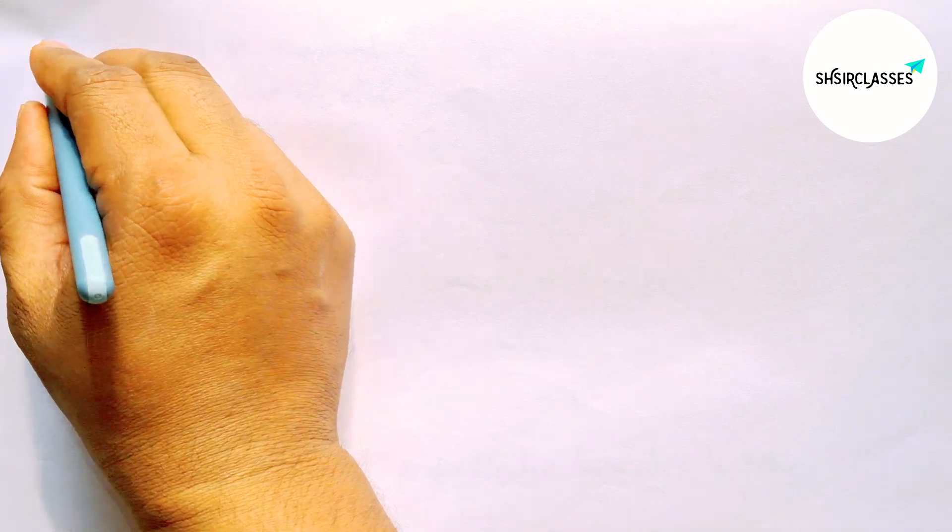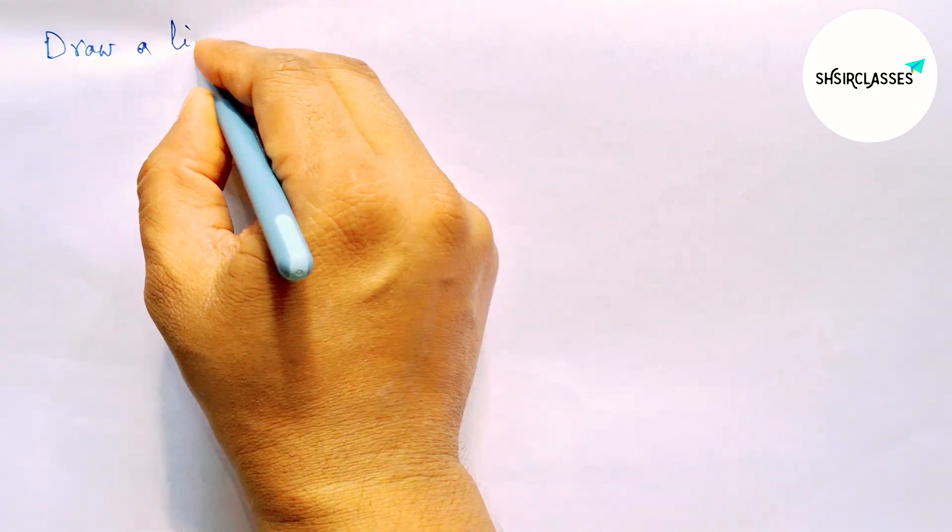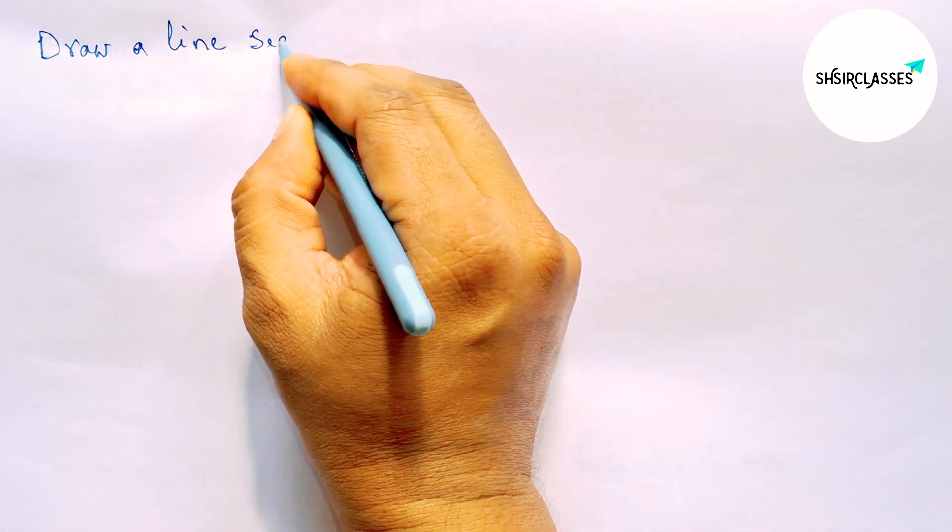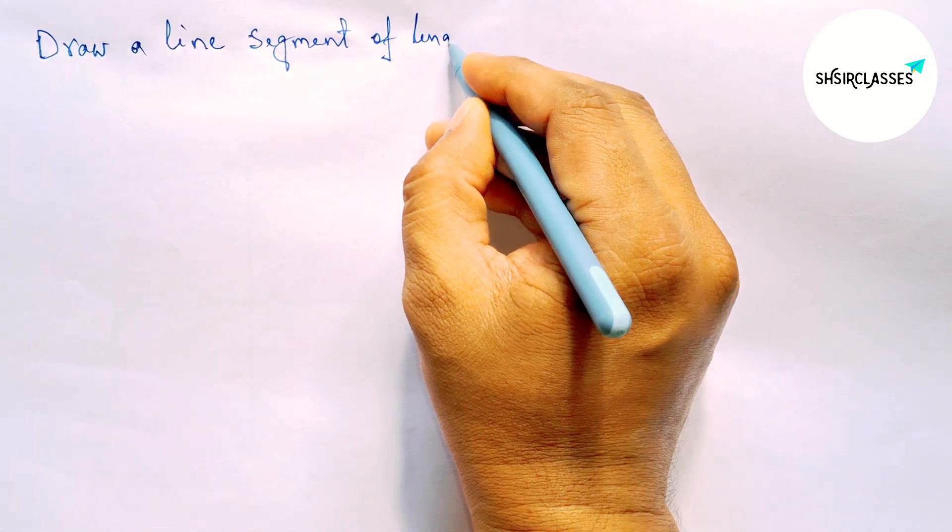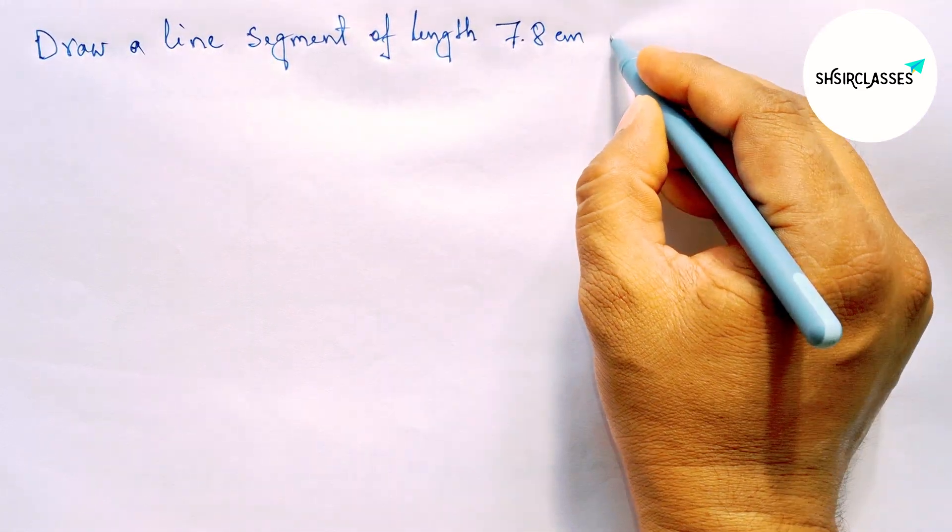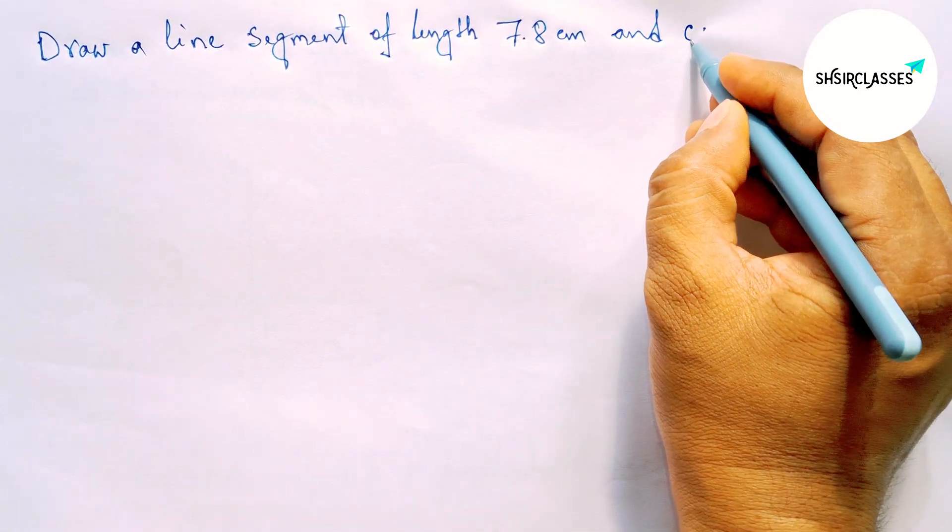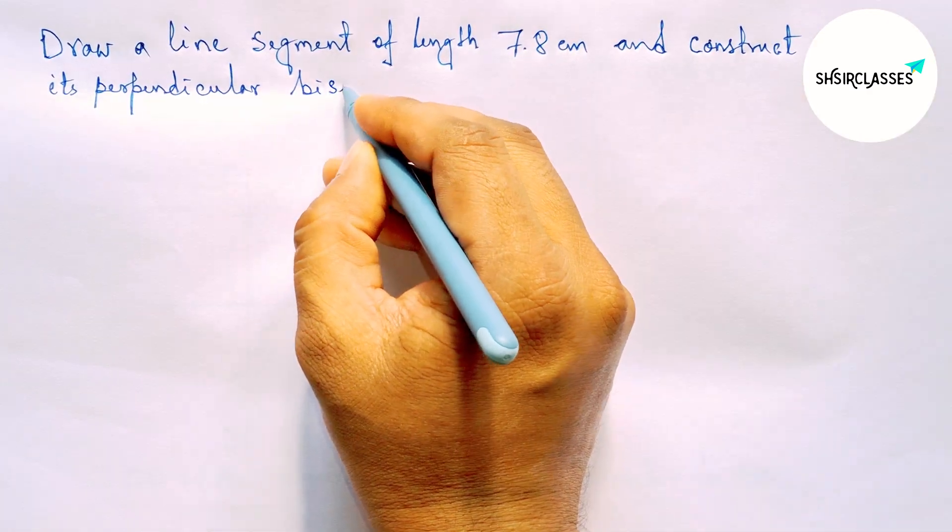Hi everyone, welcome to Sisi Classes. Today in this video, draw a line segment of length 7.8 centimeters and construct its perpendicular bisector to the given line in an easy way. So please watch the video till the end.